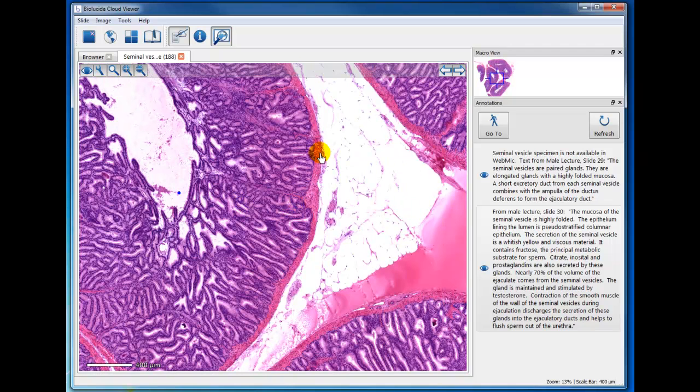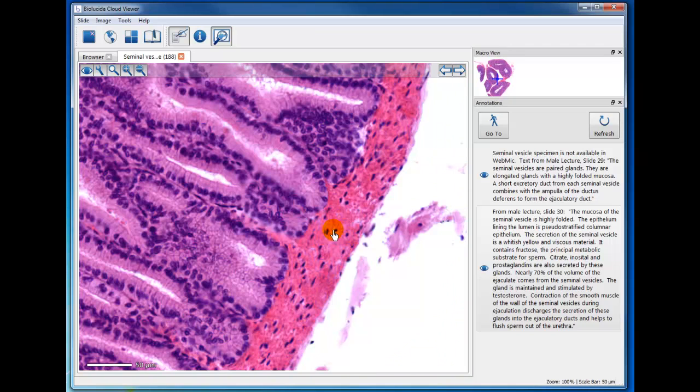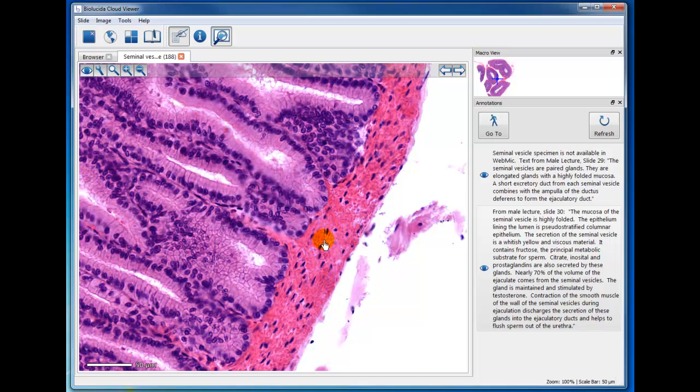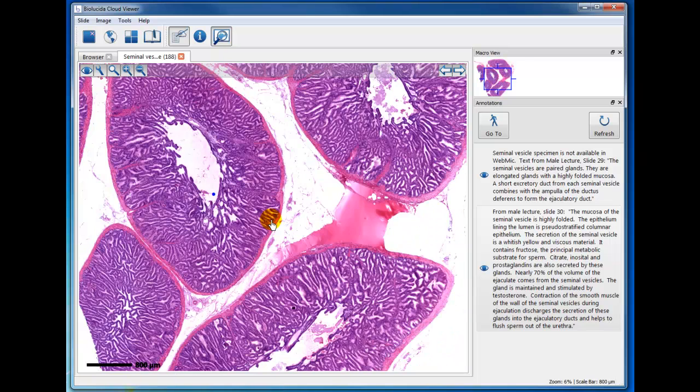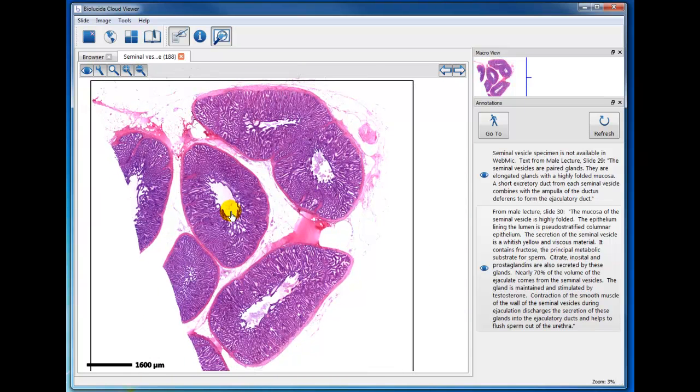So each of these tubules is enclosed with a connective tissue wrapping, and that's really about all that I have to say about the seminal vesicles.